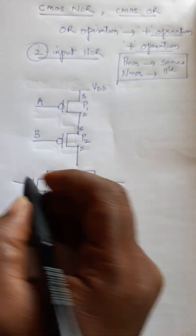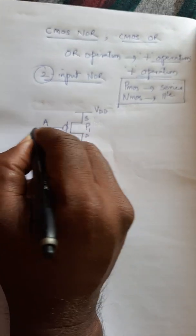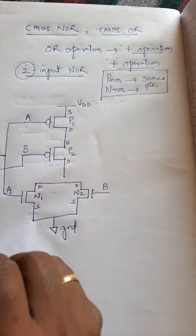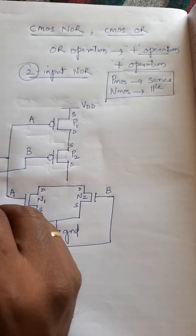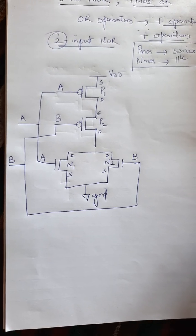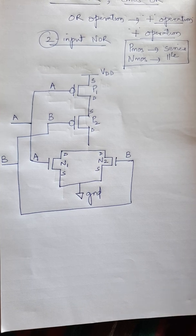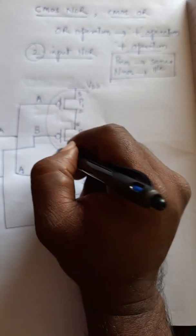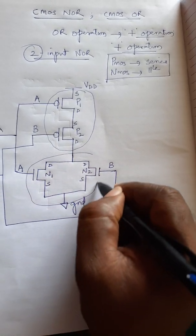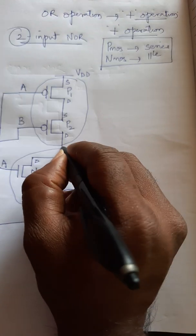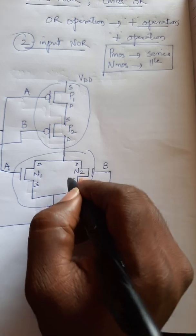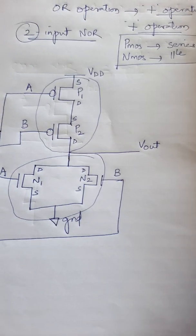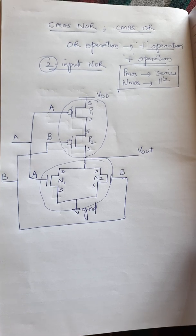Now, how to obtain the output: input A should be connected to the gate of N1, and input B should be connected to the gate of N2. The output should always be obtained at the shorted drain of the P block and N block. Connecting the drain of P2 and the shorted drain of N1 and N2 gives the output, V out. This is the transistor-level schematic diagram for the CMOS NOR gate.